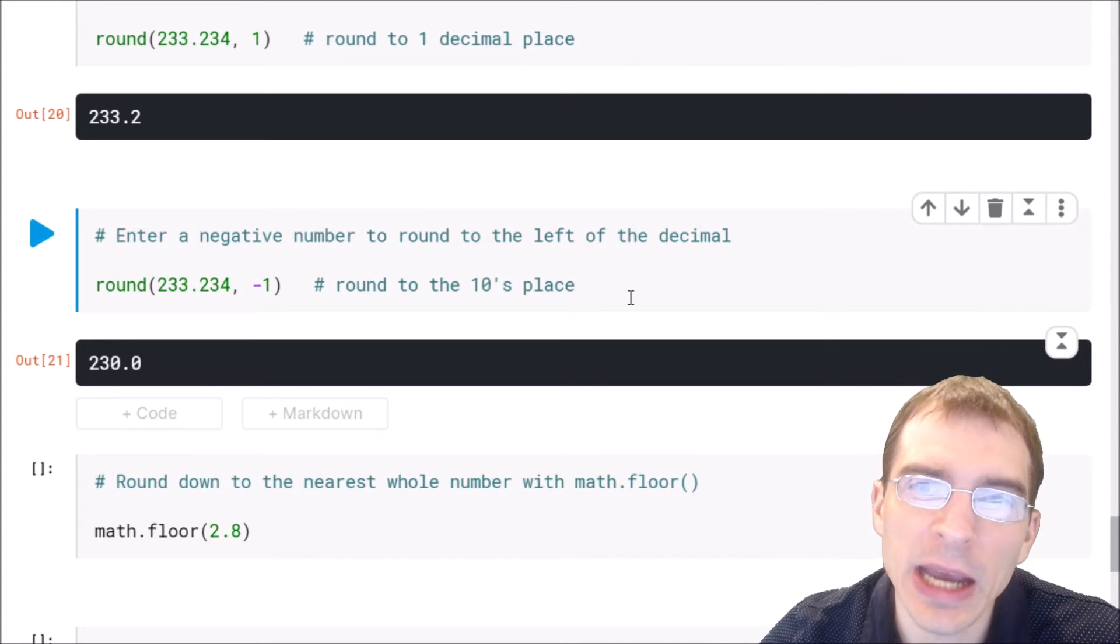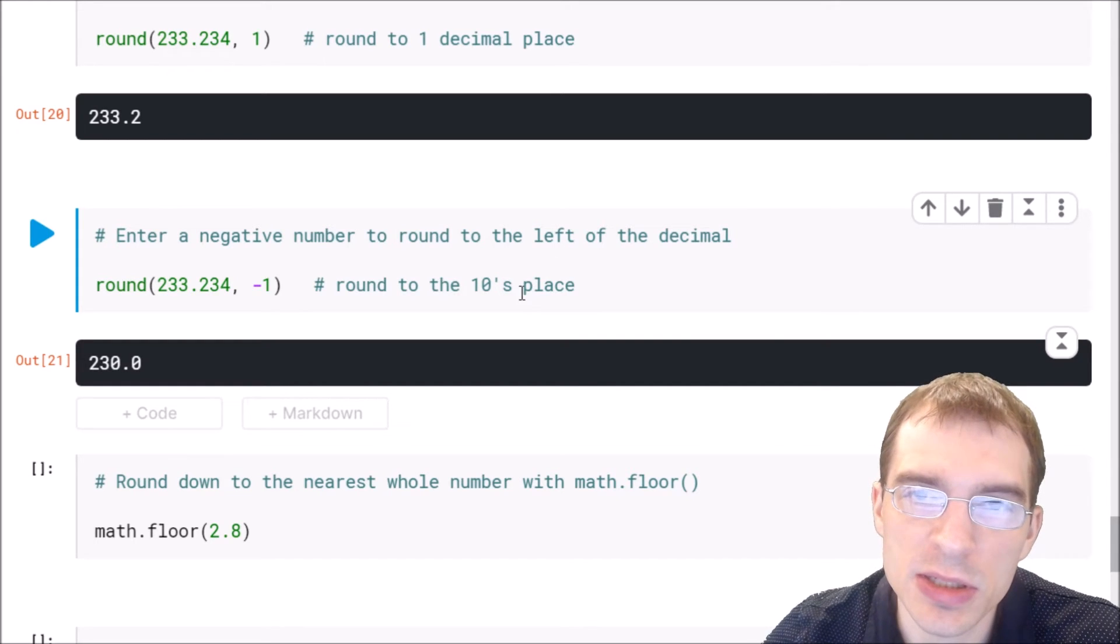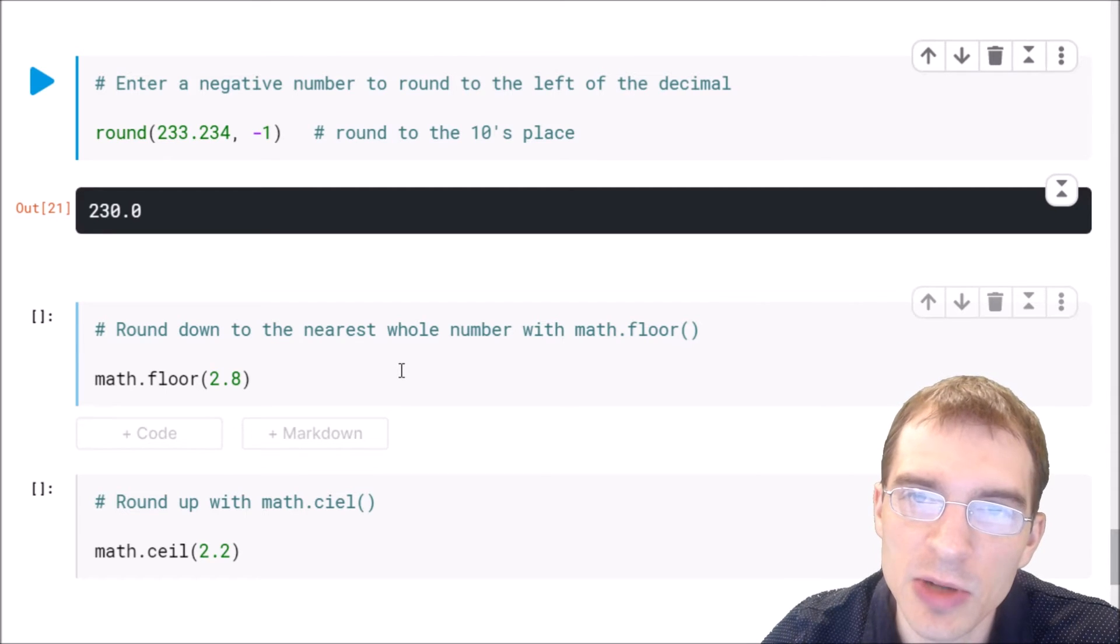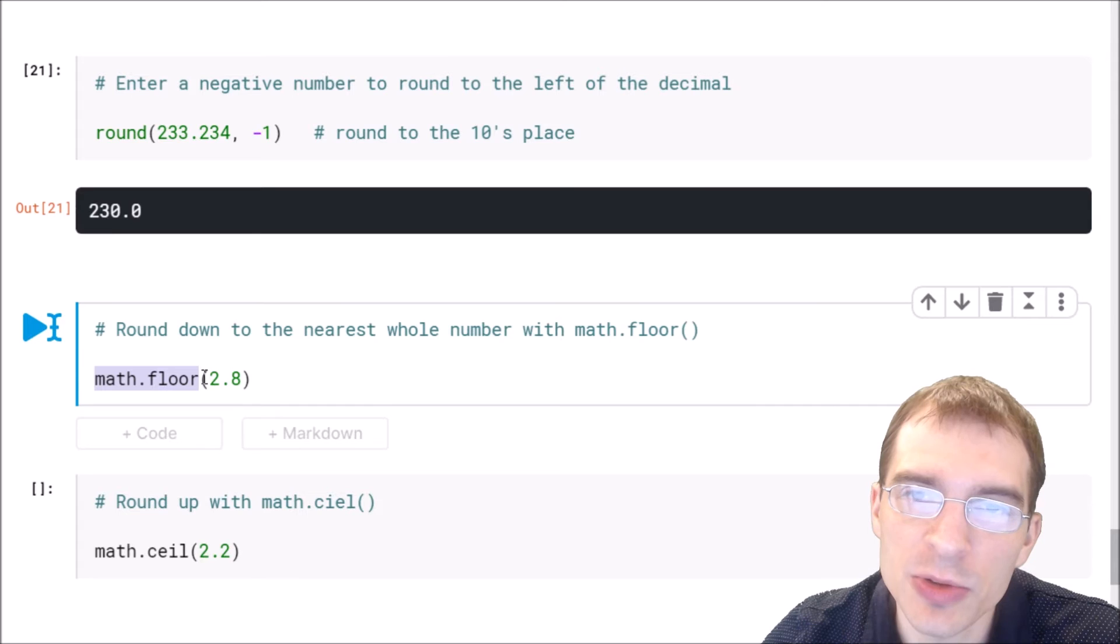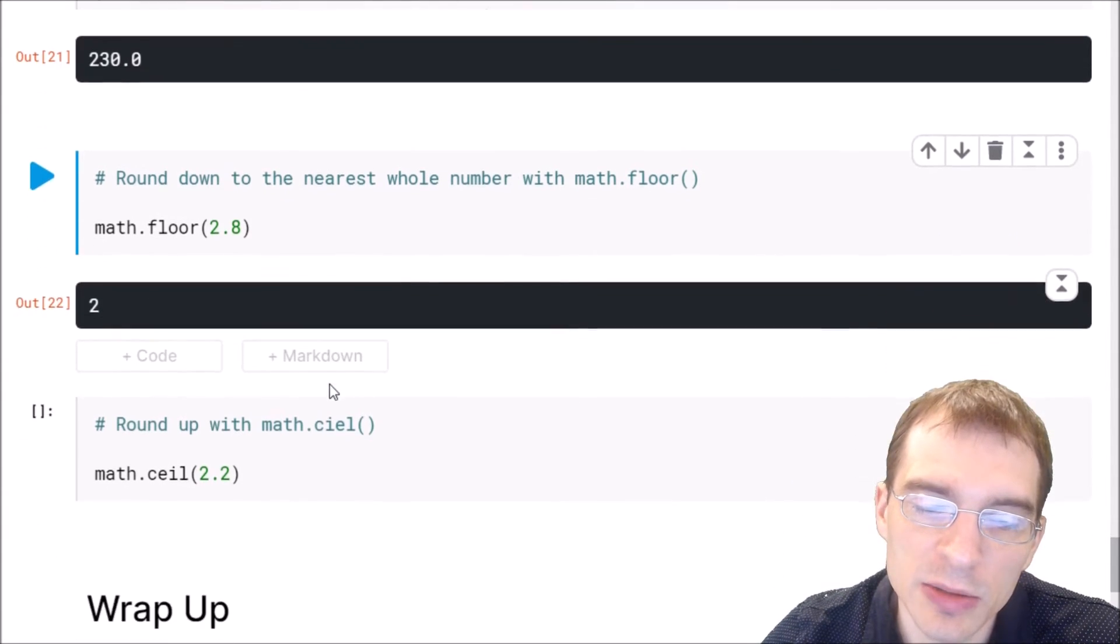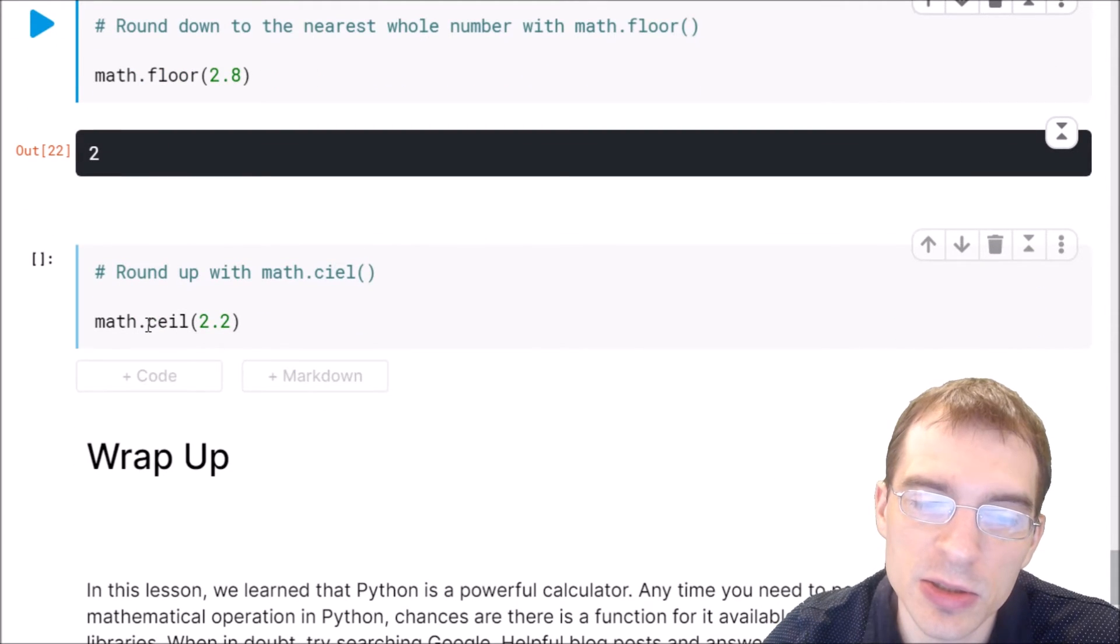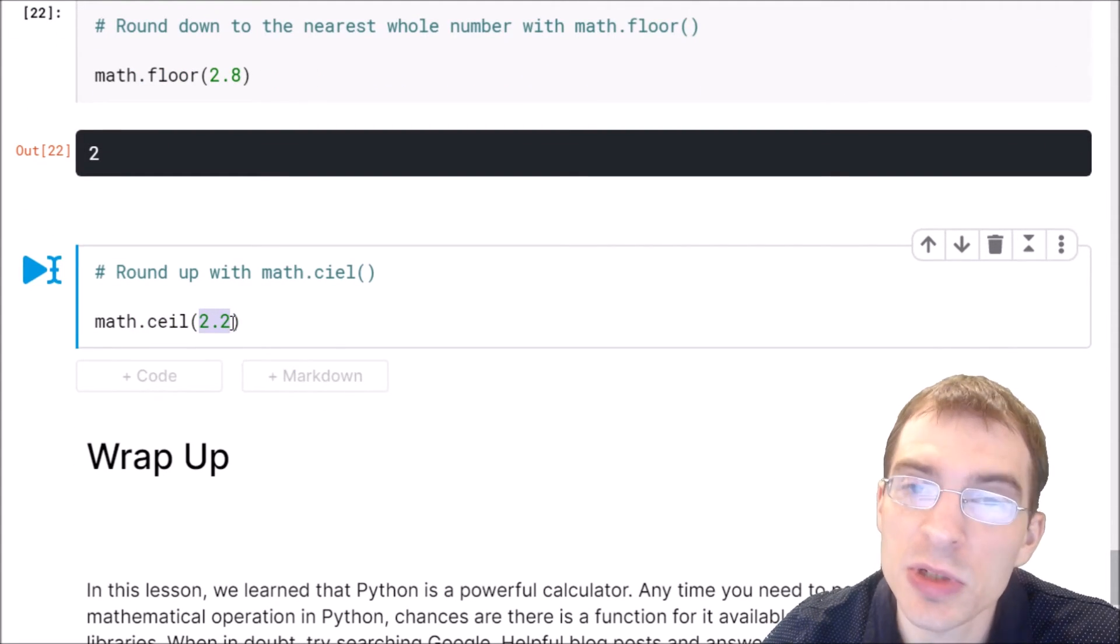Within the math package that we loaded earlier, there are also additional rounding functions to do floor and ceiling rounds. A floor round just means you always round down, and a ceiling round means you always round up. With math.floor, we're rounding down to the nearest whole number regardless of what the decimal is. So even though 2.8 is closer to 3, when we do math.floor on it, it will go down to 2. Similarly with math.ceil or ceiling round, even though 2.2 is closer to 2, since it's a ceiling round, it will go up to the next whole number, which will be 3.